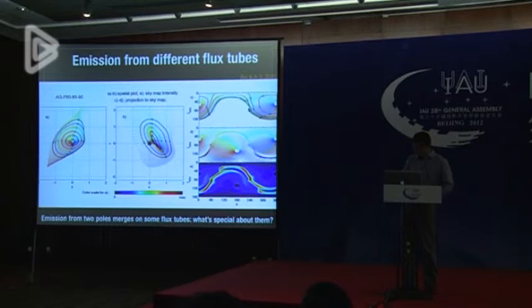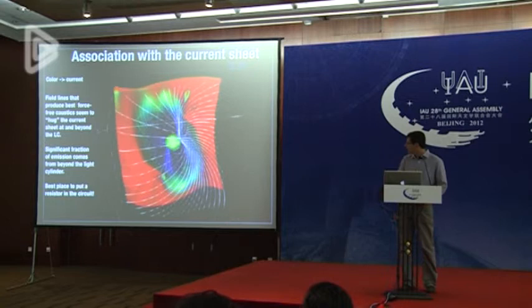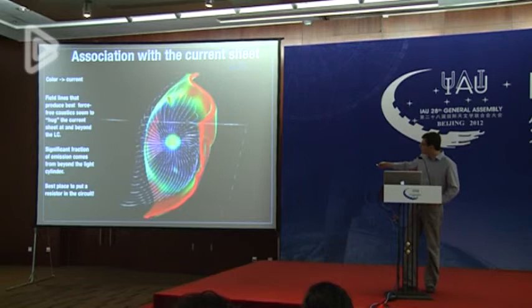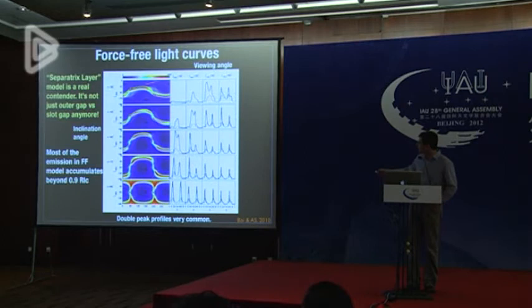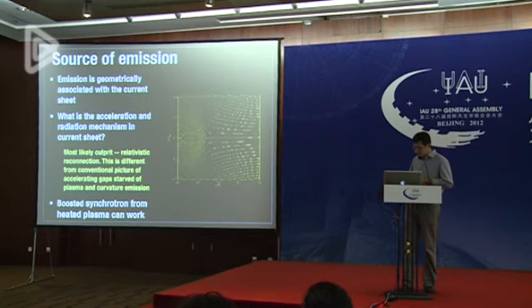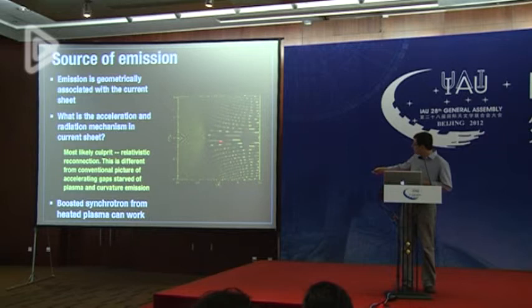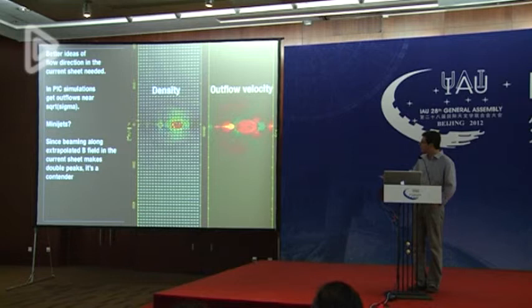Switching between different flux tubes, you find that some produce what looks like double-peak emission. This sky map produces double-peaked light curves: cutting across as the star spins gives two peaks. The flux tube producing this is hugging the current sheet — most of the emission accumulates beyond the light cylinder, from about 0.9 to about 1.5 light cylinders. From this you can construct a series of light curves that are generically double-peaked and compare very favorably with what Fermi is observing in gamma rays. We think the emission is coming from this current sheet, where reconnection drives particle heating, and those heated particles radiate gamma rays as they flow down the current.